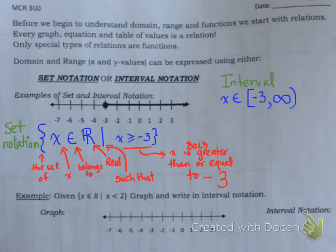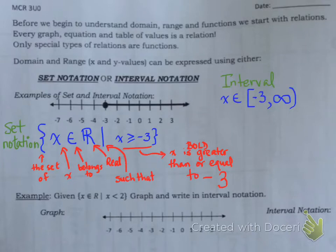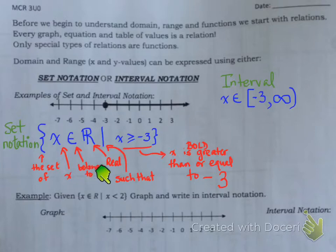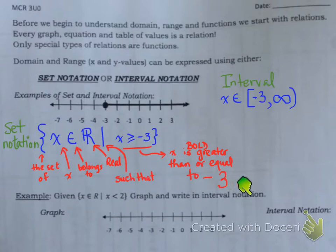This is set notation in blue, and this is interval notation as well listed above. Now let's look at the next part. We're going to say, given this - so let's read this sentence. Given the set of X belongs to real such that X is less than 2. We need to graph this on the number line and write it in interval notation. In this case, we're given the number line, but let's say you weren't given a number line - you had to draw it.